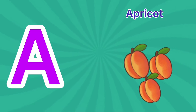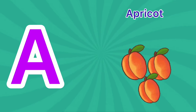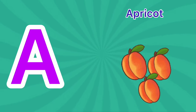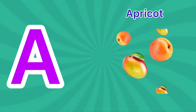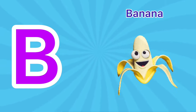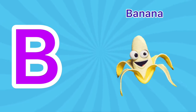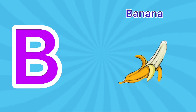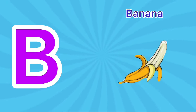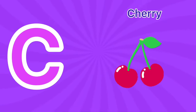A is for Apricot. A-A-A. Apricot. A is for Apricot. A-A-A. B is for Banana. B-B-B. Banana. B is for Banana. B-B-B.